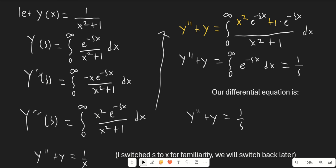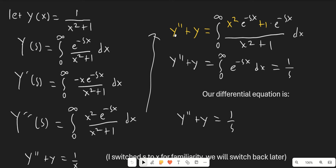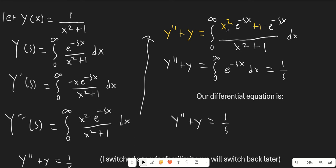Notice that if we differentiate Y(s), we get Y'(s) equals the integral from 0 to infinity of e to the negative sx over x squared plus 1. If we take the derivative again, we actually get a nice x squared out in front. This means if we add Y'' and Y together, the x squared and the 1 cancel with x squared plus 1 on the bottom. So overall, Y''(s) plus Y(s) equals the integral from 0 to infinity of e to the negative sx dx, which is just 1 over s.